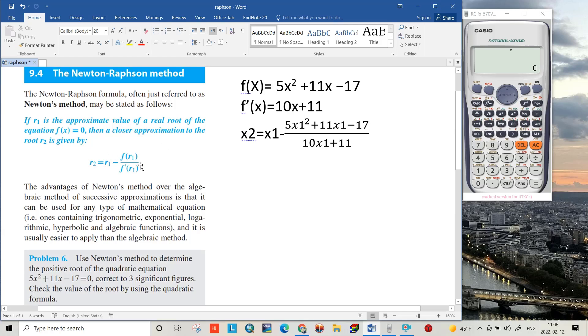And if we write the Newton-Raphson method it will be x2 = x1 - (5x1² + 11x1 - 17) / (10x1 + 11). Let's define, we have to start with x1.